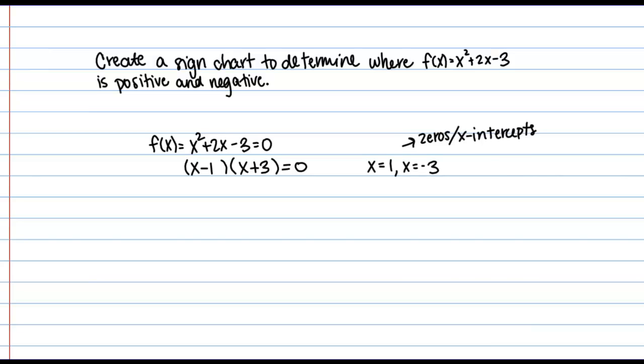So what we've just found are our zeros or our x-intercepts. So I'm going to take this information and I'm going to construct the skeleton of a number line. And what I'm going to do is I'm going to take these zeros and I'm going to place them on my number line. And these are x-values, right? Negative 3 and 1.